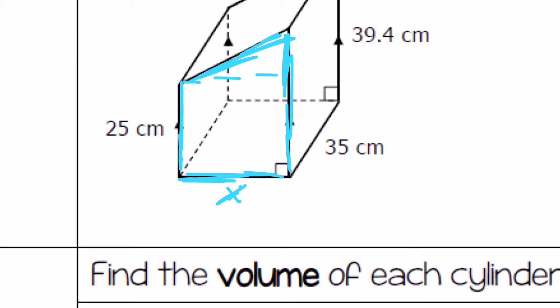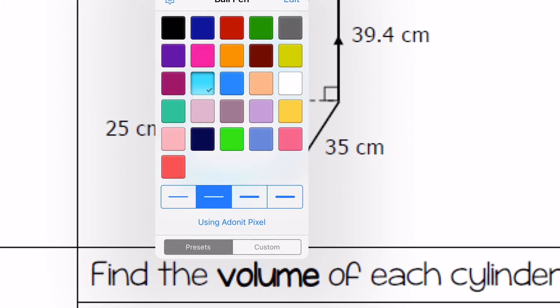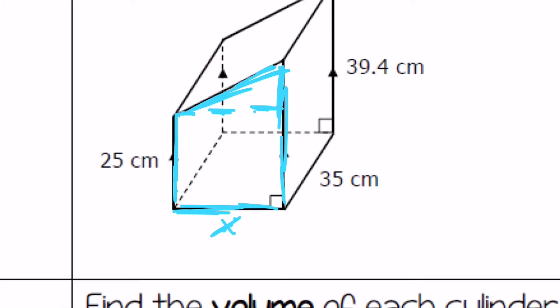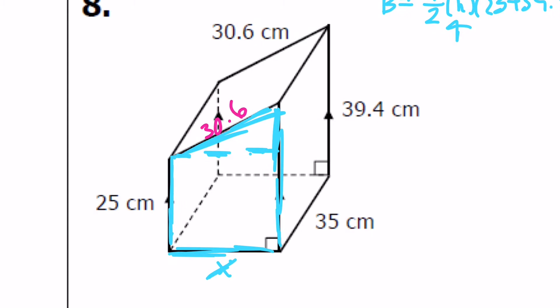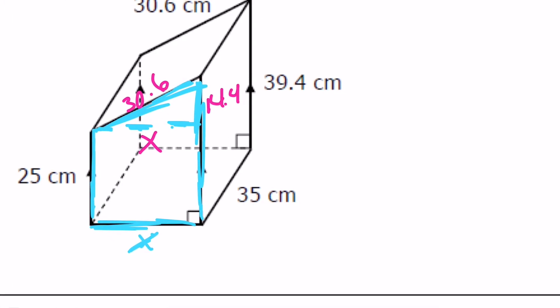In order to do that, again this is the height of our trapezoid I need to find it. I can find it by finding it over here with this little sliver of a triangle. Because I know this is thirty point six, since this whole thing here is thirty nine point four and this piece is twenty five, I can find this little piece by taking thirty nine point four minus twenty five. And now that's going to allow me to use my Pythagorean theorem to find the height of the trapezoid. Once you find that you can then plug that in and find the volume of this prism. So I want to see if you can take it from there.